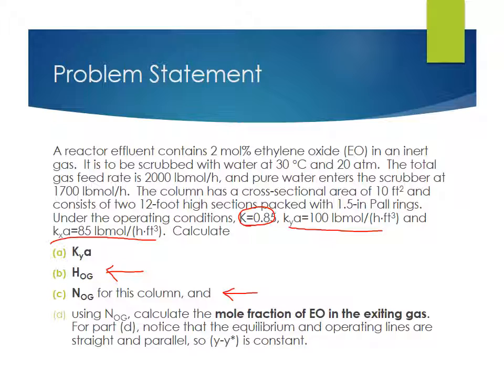And one hint is given that for part D, the equilibrium and operating lines are straight and parallel, and I will confirm that later on. So that means that Y minus Y star, the difference between the actual mole fraction and what we would have at equilibrium is constant. And that's going to be beneficial for integrating the equation for NOG.